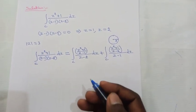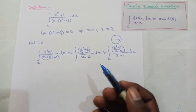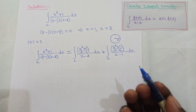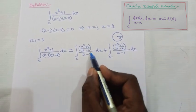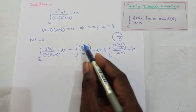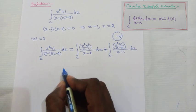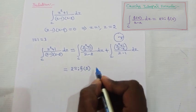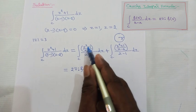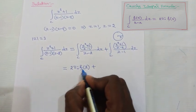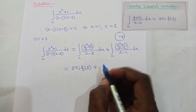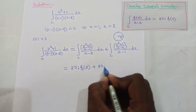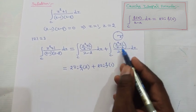Now we apply the Cauchy integral formula: ∫_c f(z) / (z - a) dz = 2πi · f(a). For the first integral, f₁(z) = (z² + 1)/(z - 1) and a = 2. For the second integral, f₂(z) = (z² + 1)/(z - 2) and a = 1. We label this equation (1).